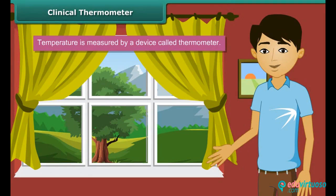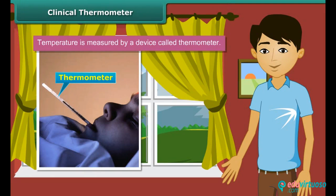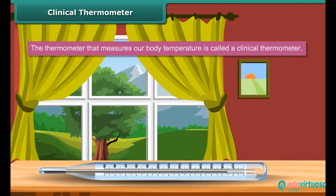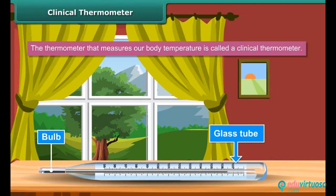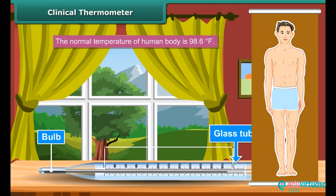Now that we have learnt about temperature, let us look at the device used to measure temperature — it is called a thermometer. The most common use of a thermometer is to measure our body temperature; such a thermometer is called a clinical thermometer. A clinical thermometer consists of a long, narrow, uniform glass tube with a bulb at one end filled with mercury. A clinical thermometer reads temperature from 95°F to 107.6°F. The normal temperature of the human body is 98.6°F. The clinical thermometer is also known as a doctor's thermometer.